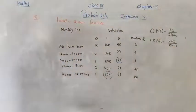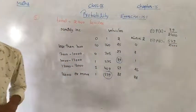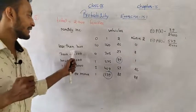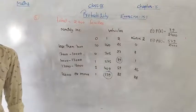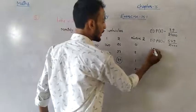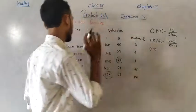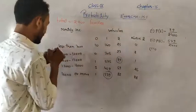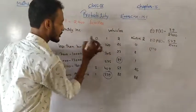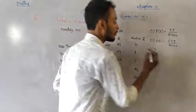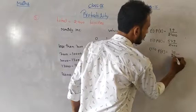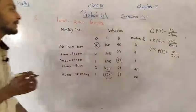Third sub-question: earning less than 7000 and owning no vehicle. From the table, such families = 10. So probability = 10/2400.